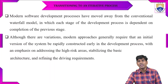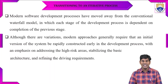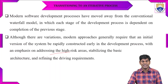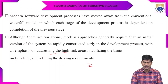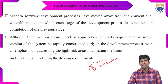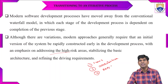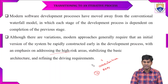In the modern approaches, initially the versions are constructed for software development and they are addressing the high-risk areas. They are going to identify what are the high-risk areas and stabilizing the basic architecture, and redefining the driving requirements. First they are going to check what are the faults in the modern approaches. Next one is architecture — this architecture needs to be verified in a thorough manner. They need to check what are the requirements of each and every stage of the software project.